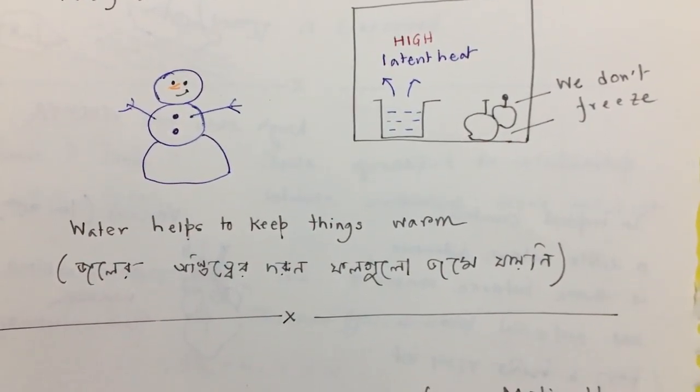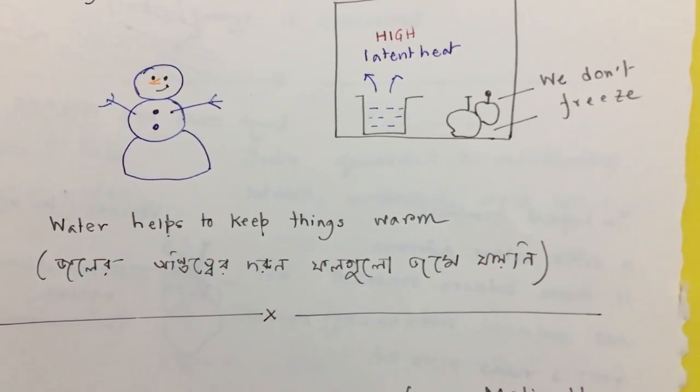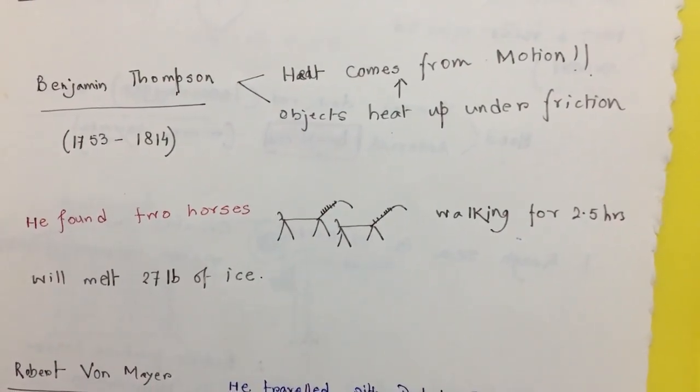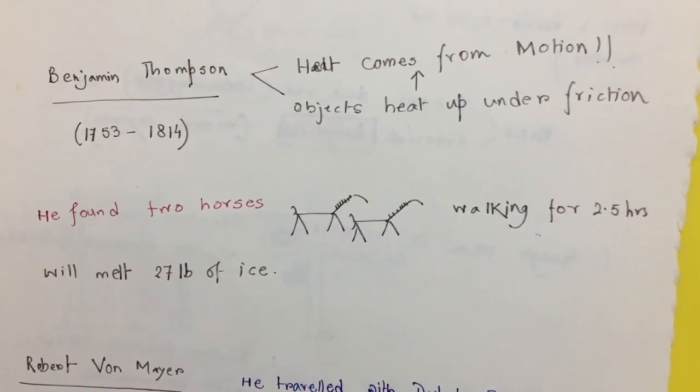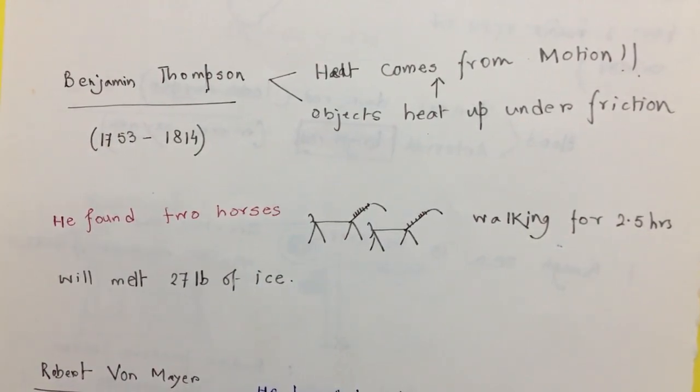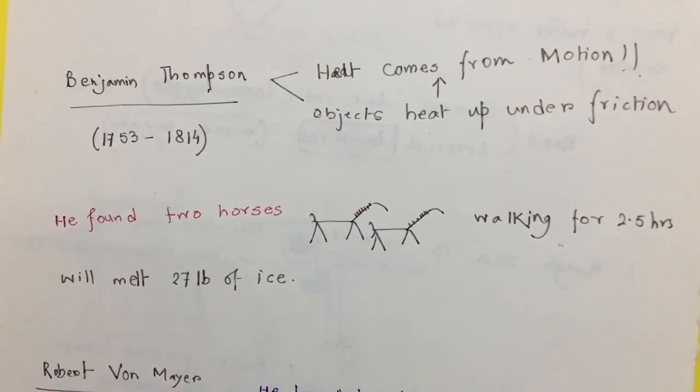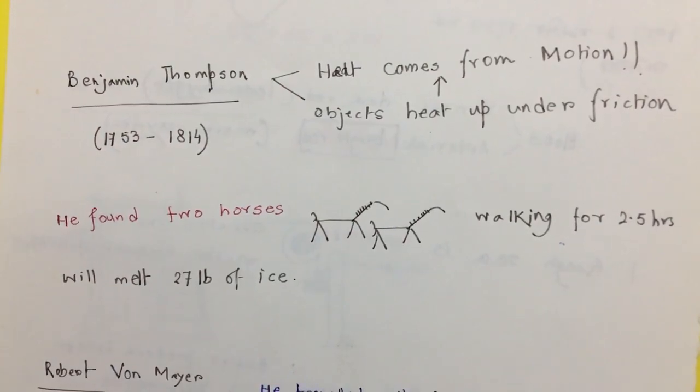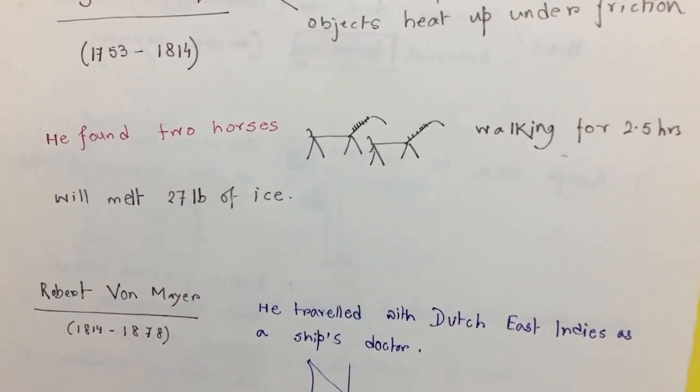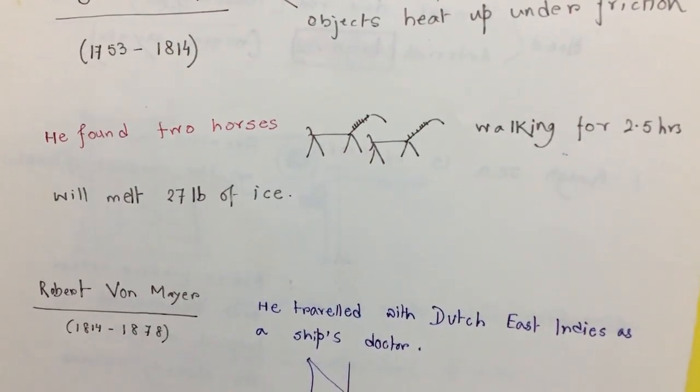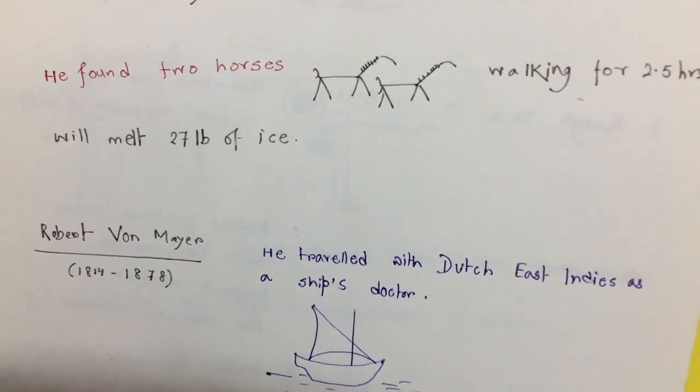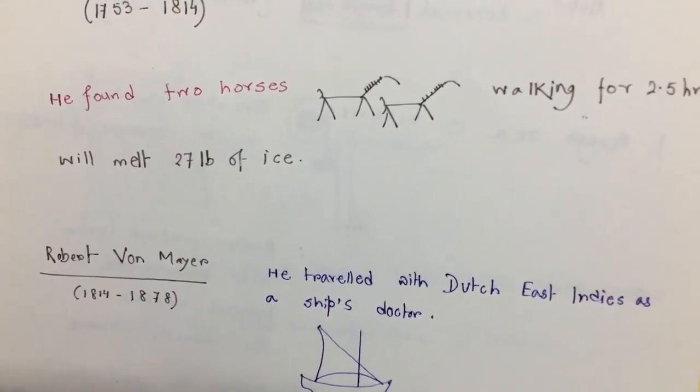So water helps us to keep things warm. That was the story of Black. Now let's come to Benjamin Thompson. He observed that when objects are kept under friction, heat is produced. And because of his observation that objects get heated up under friction, he concluded that heat comes from motion. There is a funny fact: he found that if two horses walk for 2.5 hours, the amount of heat produced will be able to melt 27 pounds of ice.